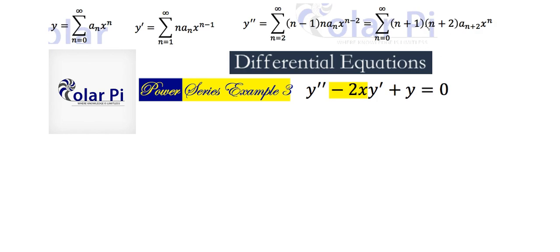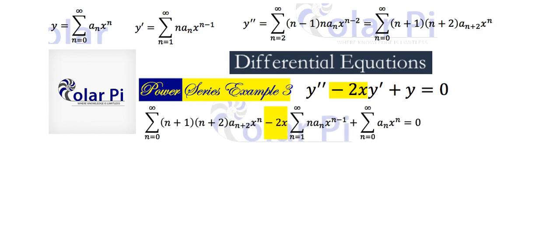I explained how you do this reindexing in my previous two examples, so I'm not going to repeat that. Plus, I have tons of videos on sigma notation if you need to learn more about sigma. Anyway, now that we've got y, y prime, and y double prime all in sigma form, we can rewrite our given equation using sigma, and here it is.